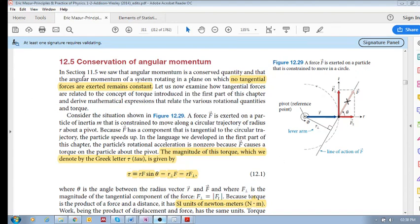In the previous sections, including this chapter and section 11.5, we saw this idea of the conservation of angular momentum, which means that as long as there's no tangential forces acting on the object that's rotating, then that means it's not speeding up. If there's no tangential force, there's no tangential acceleration, which means it's not speeding up or slowing down.